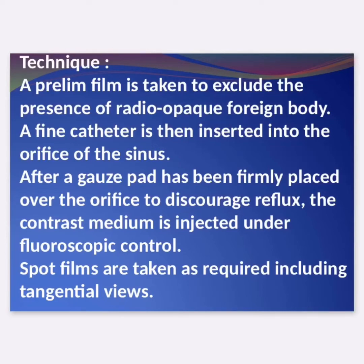Technique: A preliminary film is taken to exclude the presence of a radiopaque foreign body. A fine catheter is then inserted into the orifice of the sinus. After a gauze pad has been firmly placed over the orifice to discourage reflux, the contrast medium is injected under fluoroscopic control. Spot films are taken as required, including tangential views.